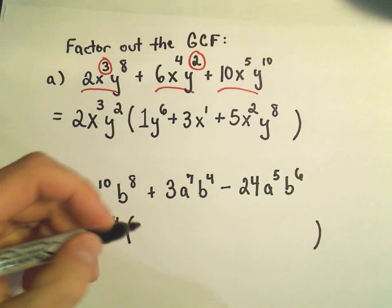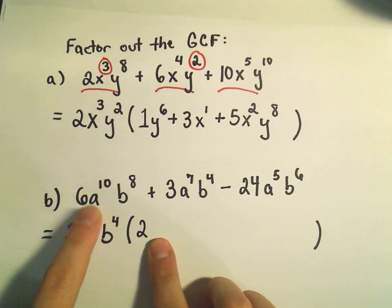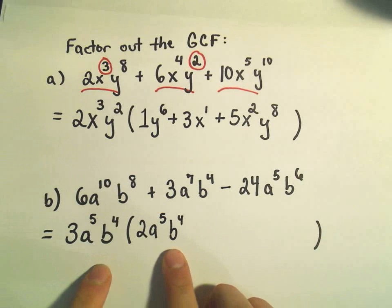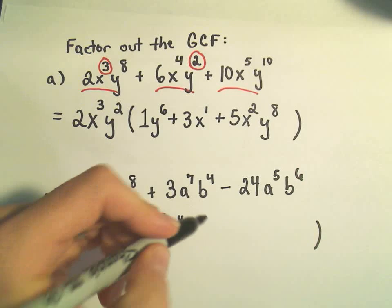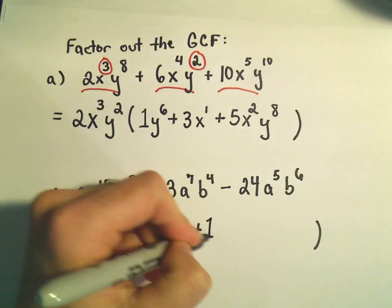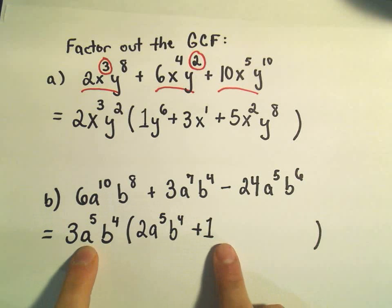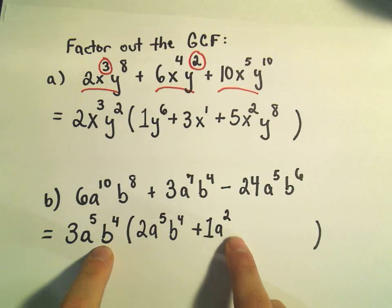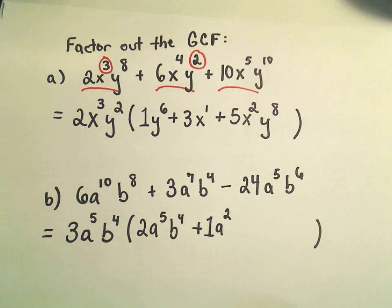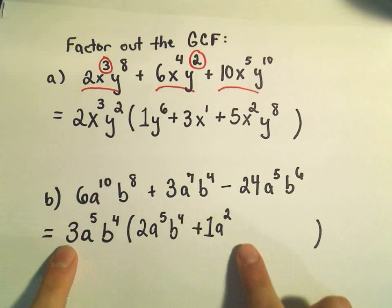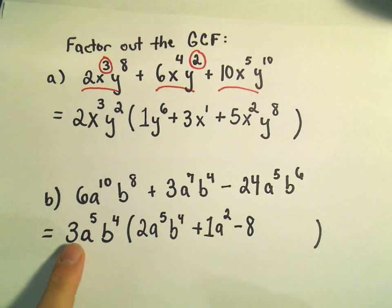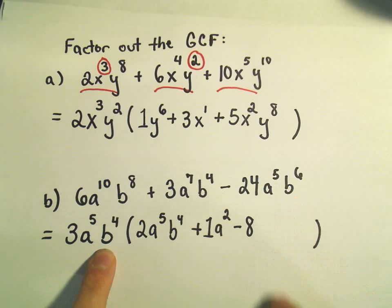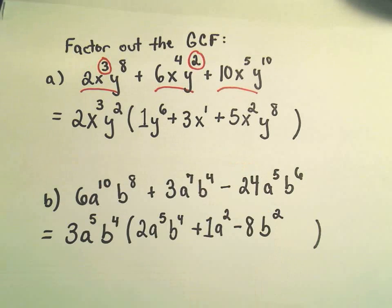So I have to be careful about what I put in the parentheses. 3 times 2 gives us 6; a to the fifth times a to the fifth gives us a to the tenth; b to the fourth times b to the fourth gives us b to the eighth. 3 times positive 1 gives us a positive 3, so I'll stick the 1 in there. a to the fifth times a to the second gives a to the seventh; b to the fourth times 1 gives b to the fourth. 3 times what is negative 24 — negative 8. a to the fifth times 1 is a to the fifth. b to the fourth times b squared gives b to the sixth — since we're adding exponents, we need a b squared.